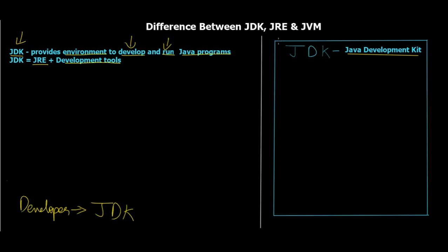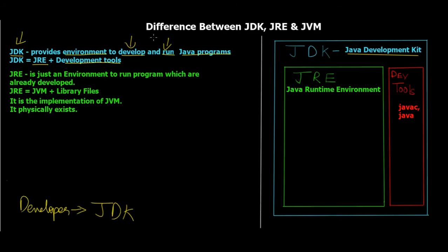I'm depicting JDK by this blue rectangular box. Now let's see what JRE is. As you can see on the screen, the green box represents JRE — the Java Runtime Environment — along with the development tools javac and java, which I'll talk about in a minute. JRE is just an environment to run programs that are already developed.